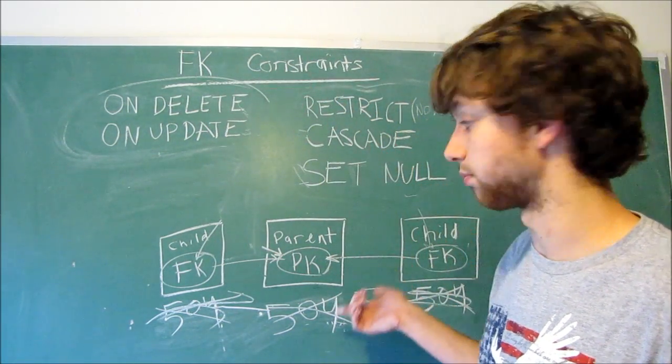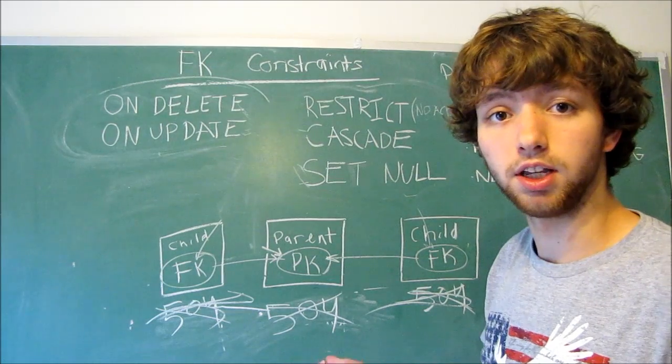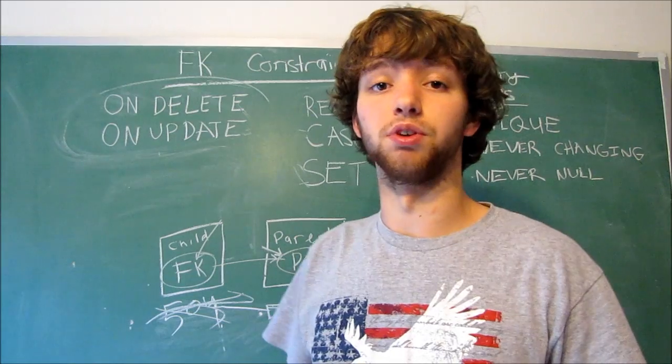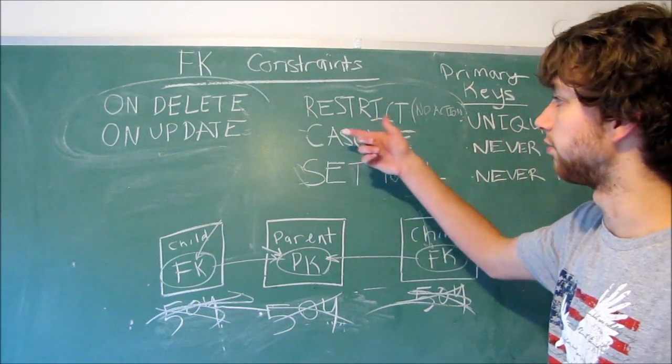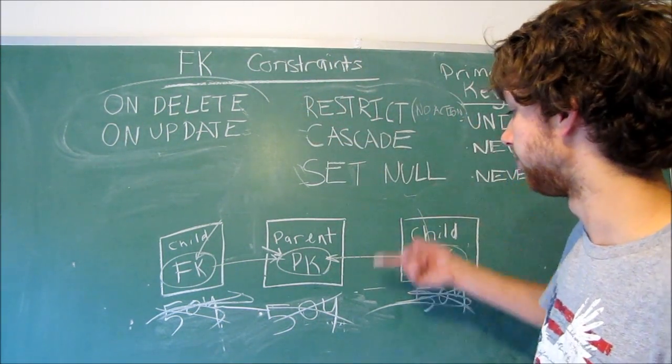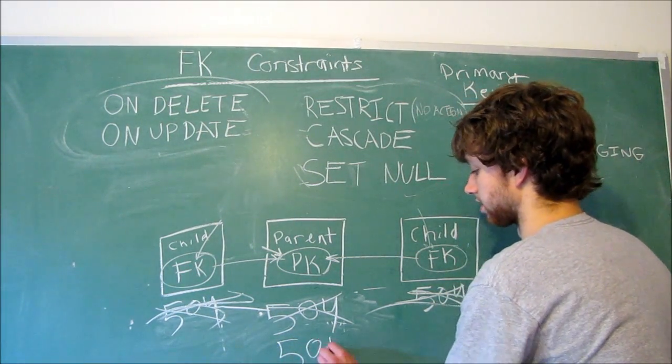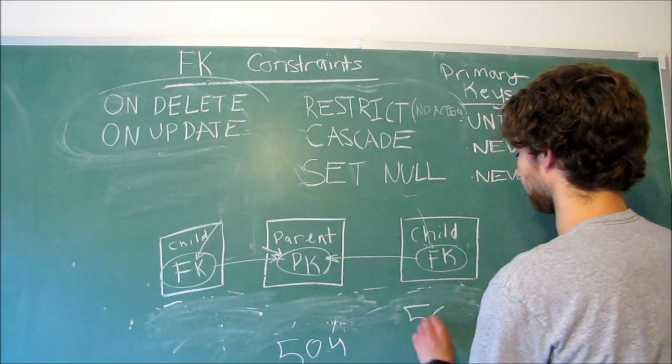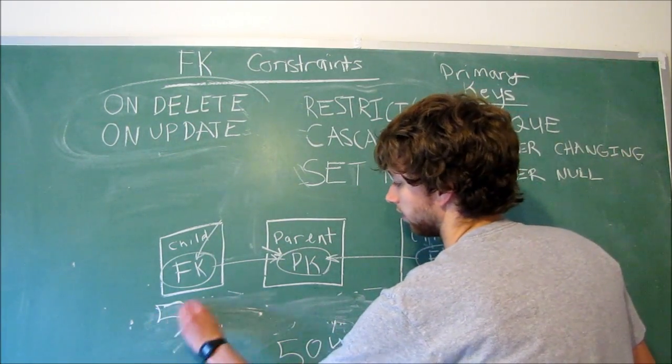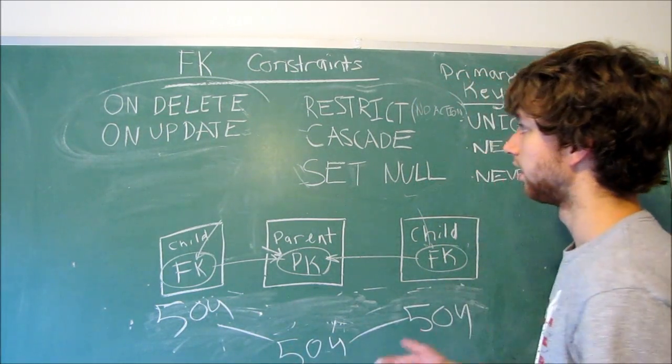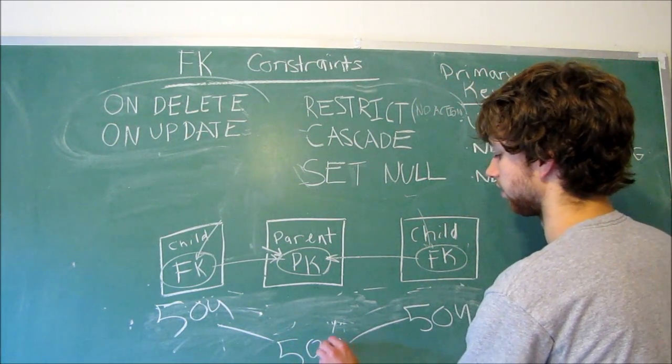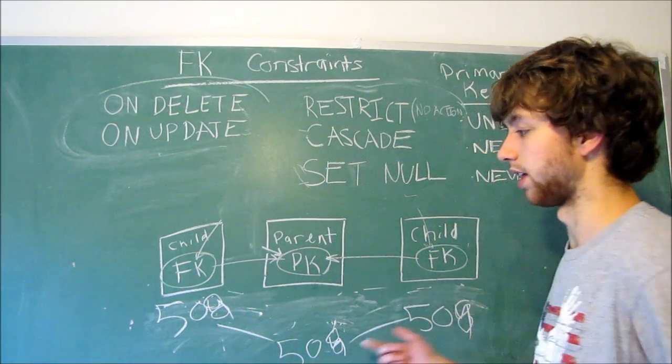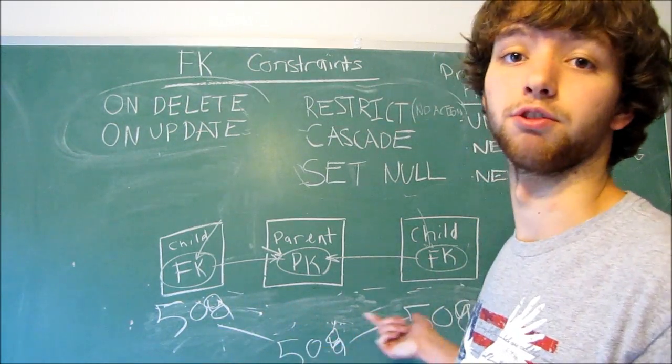ON UPDATE is if for some reason we updated the primary key, which obviously shouldn't happen because primary key should be never changing, but you still want that protection on your database. ON UPDATE, if we have CASCADE, if we change 504, let's say these people exist again. I'm just going to erase this. So these people exist again, 504, 504. These reference 504. And if we update this to 508, well, that means all of the children will update as well. So now it connects within different tables.